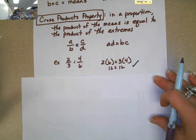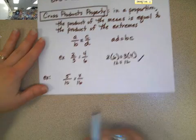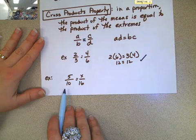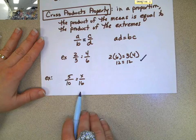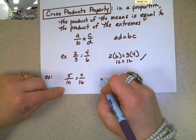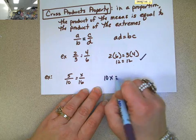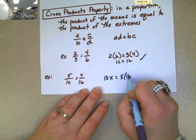And so, now what we're going to do is take a look at what a problem might look like. So, they might give you that 5 to 10 is equal to X to 16. Well, since we know the cross products property, we know that 10X is equal to 5 times 16.